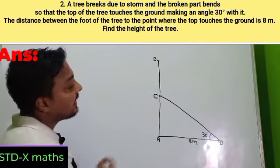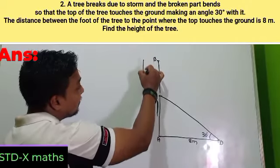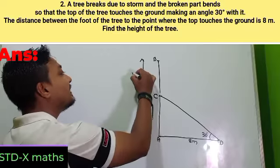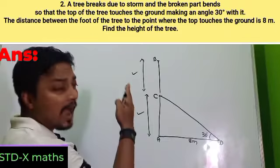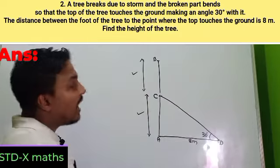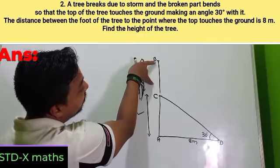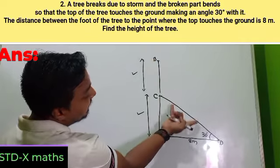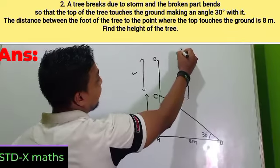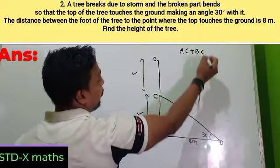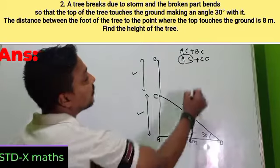The height of the tree means this height (SC) plus this height (BC). I need to find SC and CD. Since the broken part BC equals CD (the length before and after breaking is the same), the height of the tree = SC + BC = SC + CD. So two things I want to find: SC and CD.